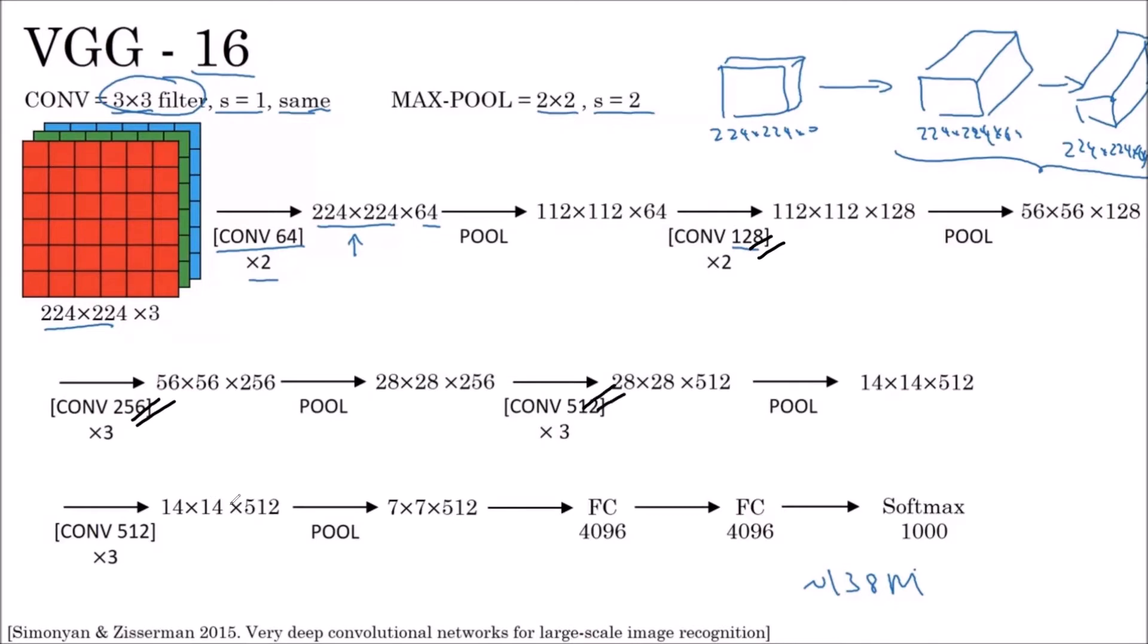Then 512 filters and 512 filters. This time the filter size they have changed to 3 by 3. So this is how a convolution layer followed by pooling layer, convolution layer followed by pooling layer—like that they have used 16 layers.